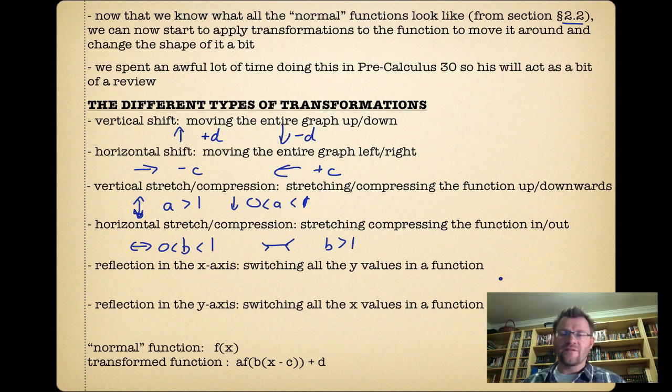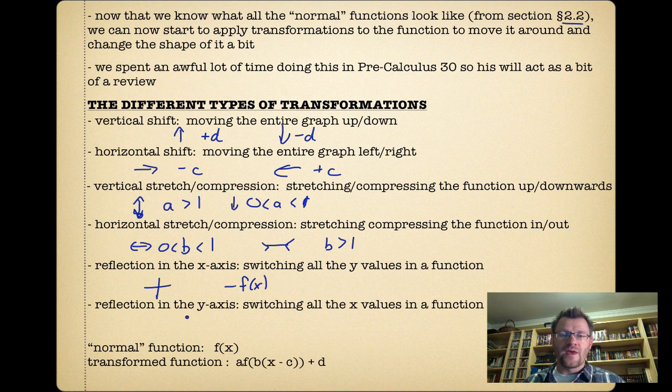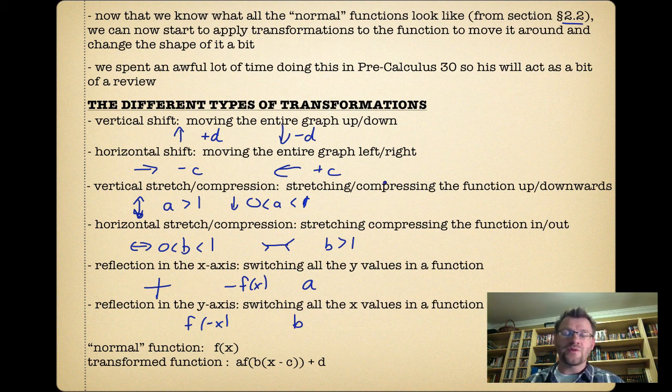A reflection in the x-axis: if you reflect in the x-axis, your y-values all switch to become negative. So this is negative f(x), as opposed to just a regular f(x). A reflection in the y-axis means all your x-values have changed, and that's when you have a negative x. For reflection in the x-axis, that's the letter a because it's in front of your function, so a would be negative. For the y-axis reflection, it would be the letter b, which is going to be negative.